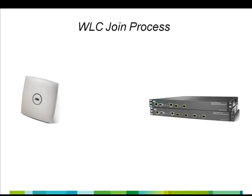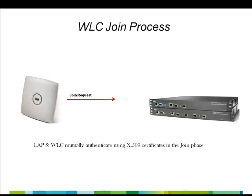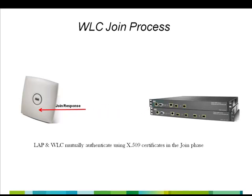Now that we have selected a controller using the selection algorithm, we move on to the join process. After the access point selects a controller, the access point sends a join request to the wireless LAN controller. In the join request, the access point embeds a digitally signed X.509 certificate. When the certificate is validated, the controller sends a join response to indicate that the AP has successfully joined the controller. The controller also embeds its own digitally signed X.509 certificate in the join response that the access point must validate. After the access point validates the certificate, the join process is complete.